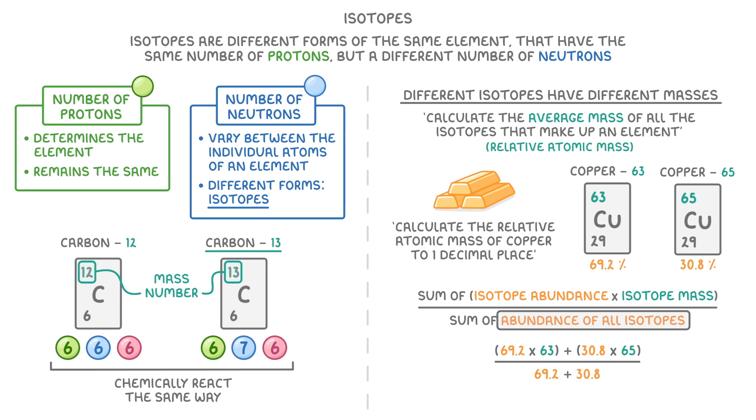Now you can either put this all straight into your calculator or simplify it down first. 69.2 times 63 gives us 4359.6, while 30.8 times 65 gives us 2002. And then we add these together to get 6361.6. On the bottom, 69.2 plus 30.8 gives us 100, which makes sense because there are only two isotopes, so together they should add up to 100%, so that they represent all of the copper atoms.